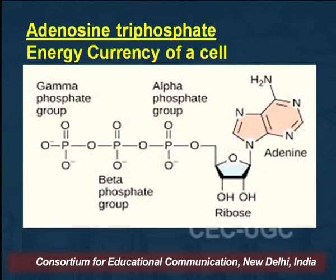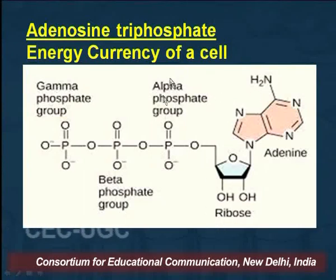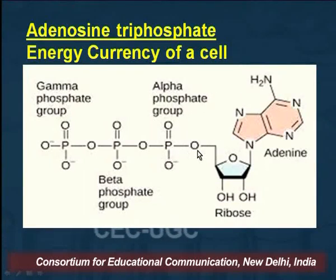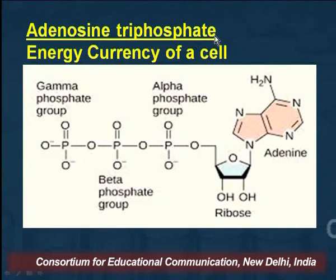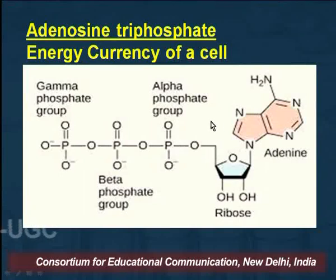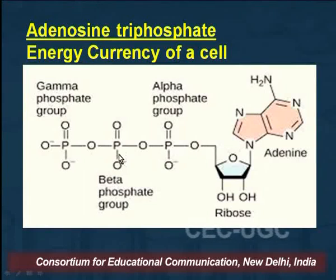In RNA we have a nitrogenous base, a phosphate group, and a ribose sugar, whereas in DNA we have a deoxyribose sugar. In ATP, adenine and ribose together form adenosine, and we call it adenosine triphosphate. As I have said, this phosphate helps in carrying and transferring energy.